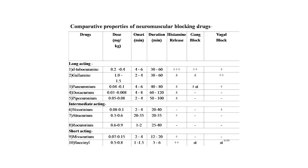Comparative properties of neuromuscular blocking drugs: d-tubocurarine — dose 0.2 to 0.4 mg/kg, onset 4 to 6 minutes, duration 30 to 60 minutes, histamine release 3+, ganglion block 2+, vagal block 1+. Gallamine — dose 1.0 to 1.5 mg/kg, onset 2 to 4 minutes, duration 30 to 60 minutes, histamine ±, ganglion block ±, vagal block 2+. Pancuronium — dose 0.04 to 0.1 mg/kg, onset 4 to 6 minutes, duration 40 to 80 minutes, histamine ±, ganglion block ±, vagal block 1+.